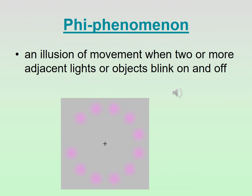Another concept is the phi phenomenon — an illusion where we perceive movement when we see adjacent lights blinking on and off. If you've ever seen an arrow on a marquee, by making those lights blink at different times, it appears to be moving down the arrow.